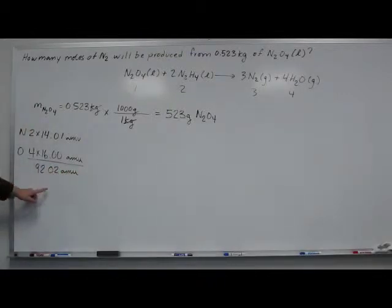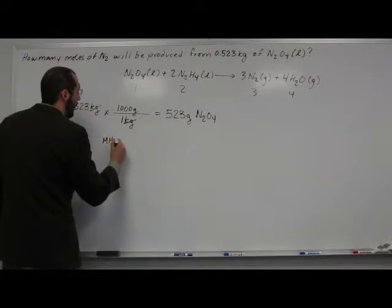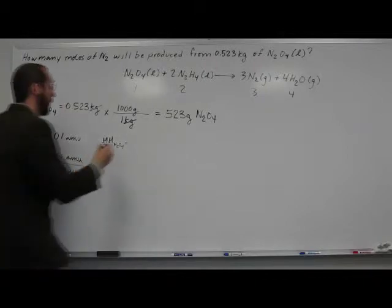Remember, that's the molecular weight of dinitrogen tetroxide. We can assume the molar mass of dinitrogen tetroxide is 92.02 grams per mole.